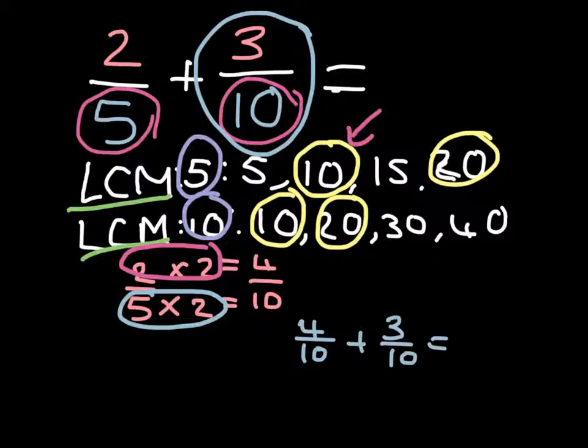But now, that is not the answer. Our new number sentence is 4 over 10 plus 3 over 10.